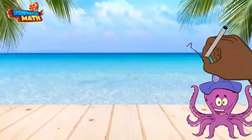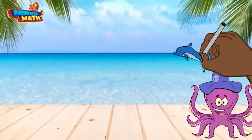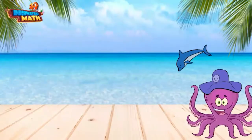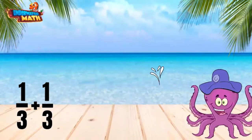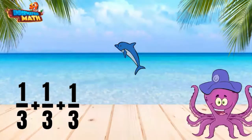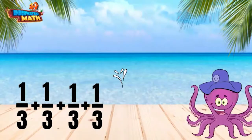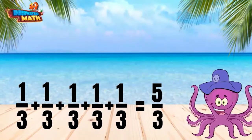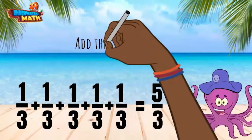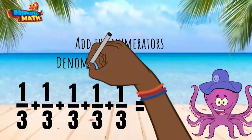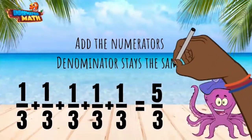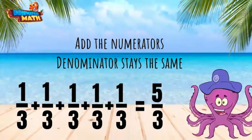My friend Daphne is practicing getting big air. She jumped one-third of a mile out of the ocean every day for 5 days. We can express her total air, 5 thirds, as a sum of unit fractions. Remember, when adding fractions, you only add the numerators and the denominator stays the same.